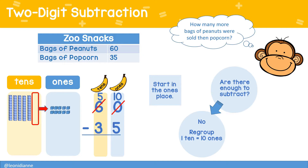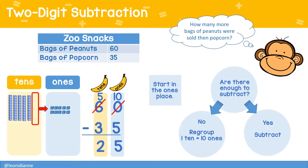Now, are there enough to subtract? There are. Ten minus five equals five, and five tens minus three tens is two tens. There were 25 more bags of peanuts sold than popcorn.